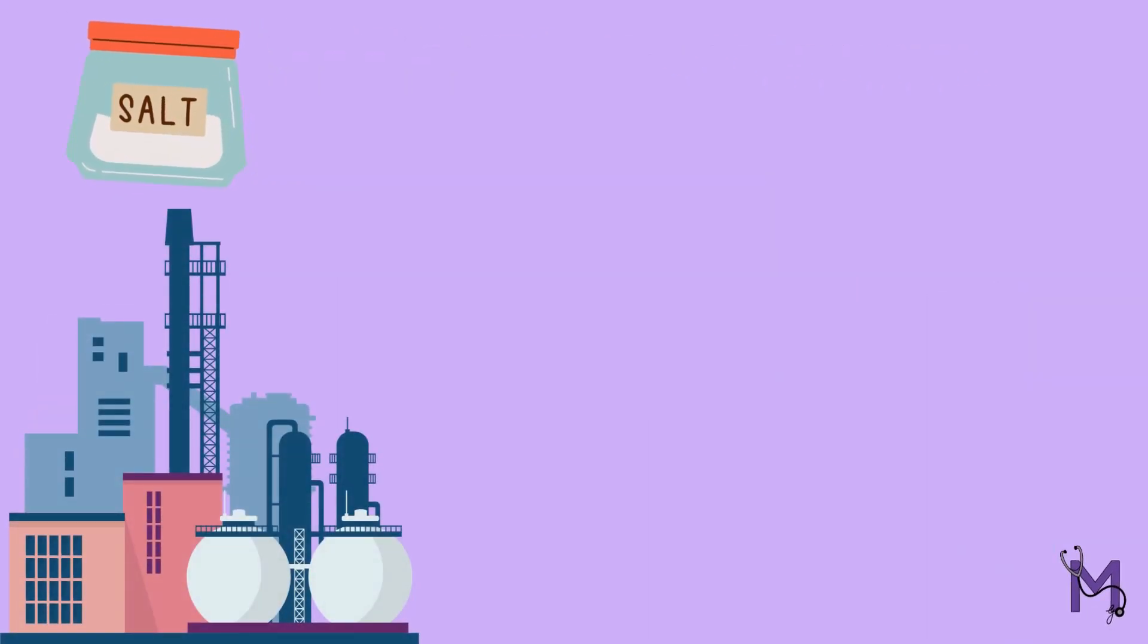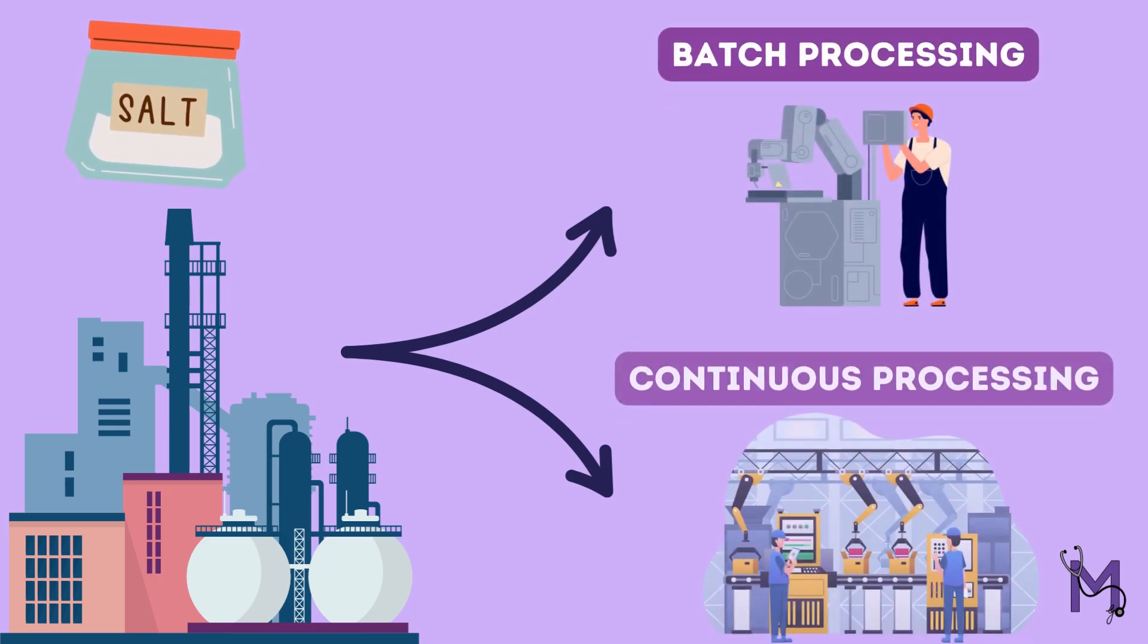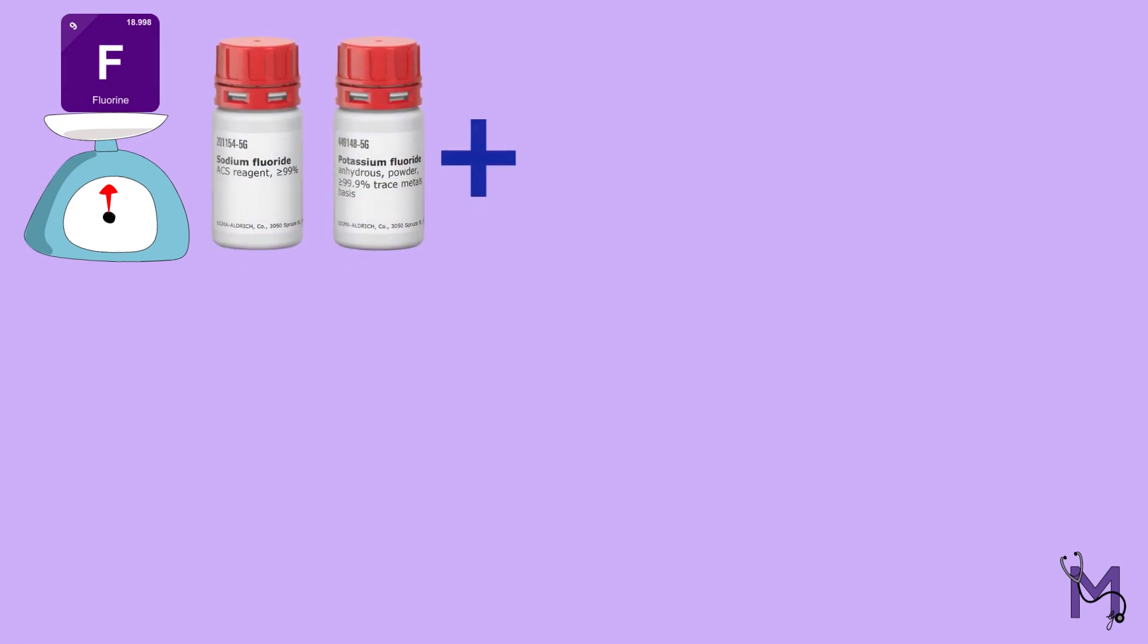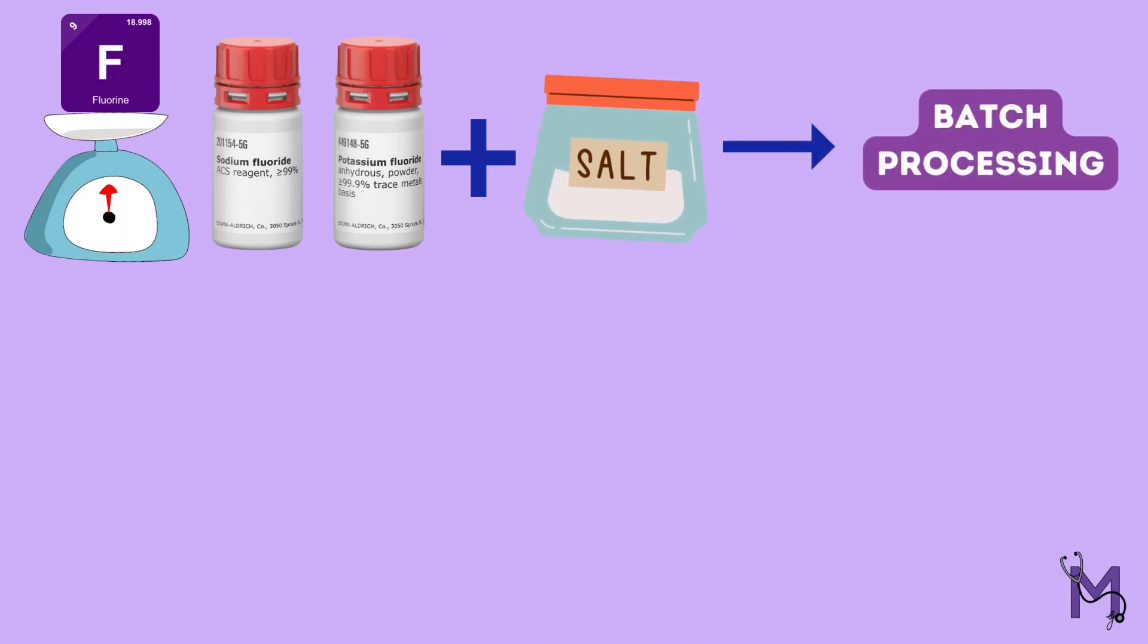Talking about the salt production process, there are mainly two ways of doing this: batch processing and continuous processing. When a fixed amount of fluoride compound, either sodium or potassium fluoride is added to a fixed amount of refined salt, it's termed as batch processing.